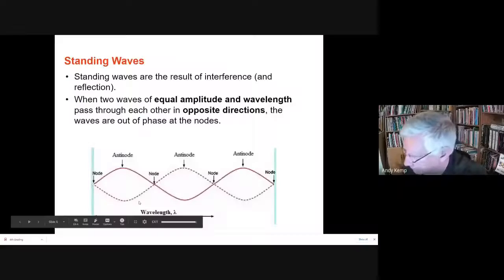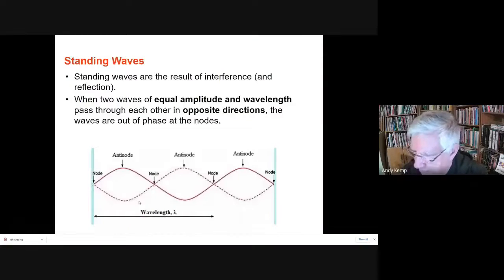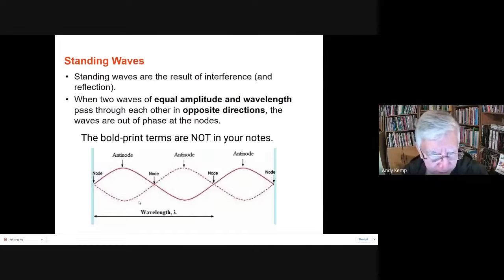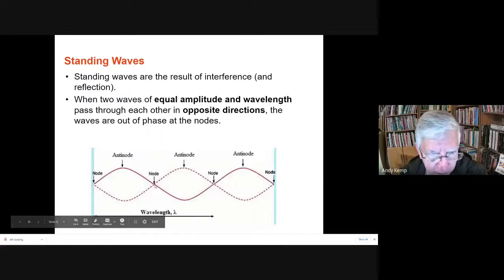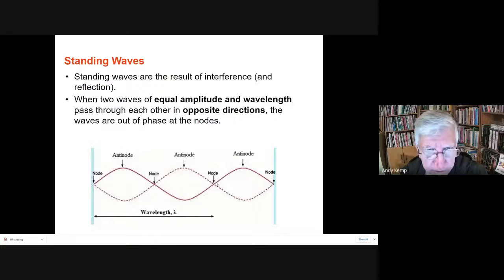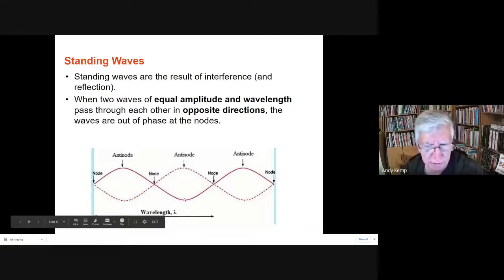Here's just a depiction of what a standing wave would look like if you could do a snapshot of it. You've got these parts that don't move at all. Those are called the nodes. And then you've got these parts that are very far apart in between the nodes, halfway in between the nodes. Those are called the anti-nodes.